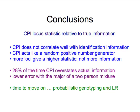In conclusion, we looked at the CPI locus statistic relative to our best estimate of true information, which is a full Bayesian calculation on the computer. We see that CPI does not correlate well with identification information — it seems to act very much like a random number generator that gives positive numbers when that's the answer you want. More loci will give a higher statistic, but it doesn't look like it's giving much more identification information. A quarter of the time, CPI seems to overstate the actual information, and we did see a slightly lower error when restricting to only the major contributor of a two-person mixture, but it's still 15% error. So perhaps if the goal is accurate identification information, it might be time to move on to probabilistic methods, genotyping, and likelihood ratios.